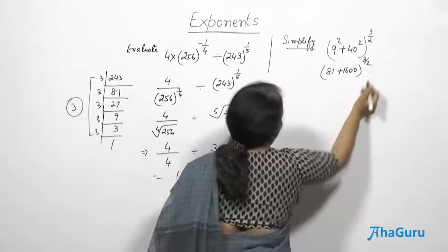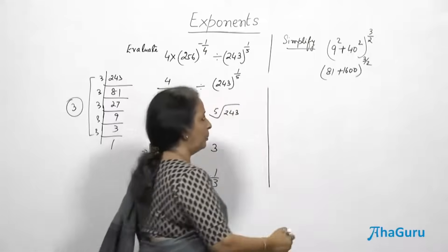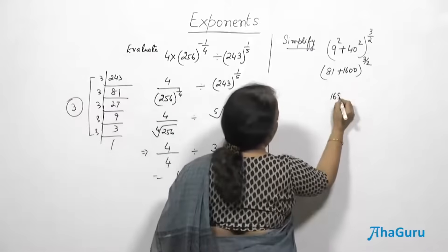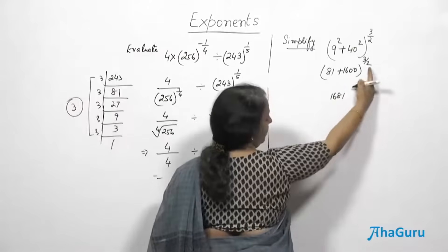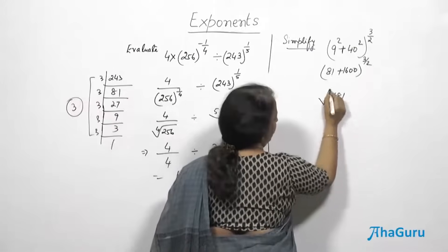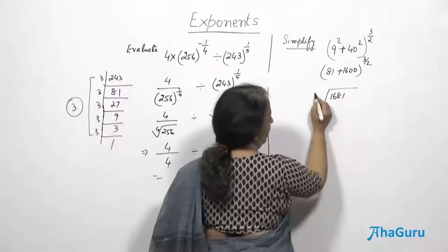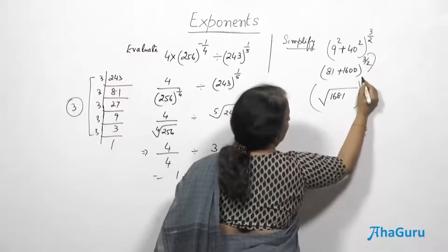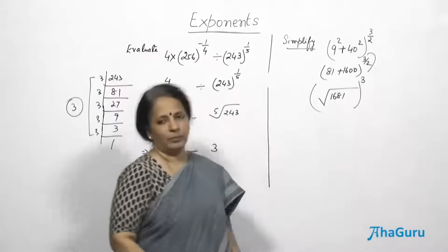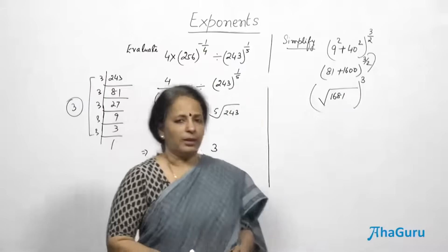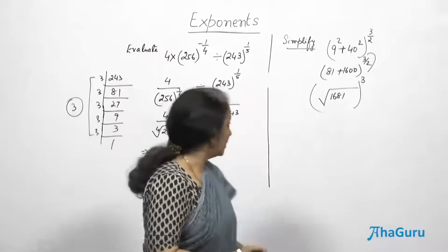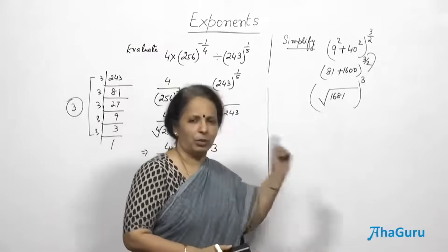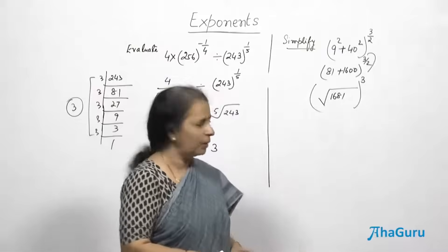So 9² + 40² = 81 + 1600, and the whole thing is to the power 3/2. Adding gives 1681. Since the denominator of the power is 2, that means we need the square root of 1681, and then the 3 comes as the outer exponent (the cube).